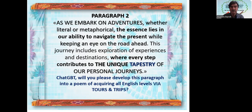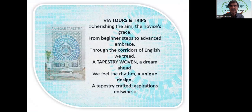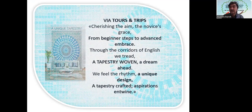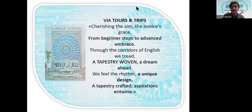ChatGPT, will you please develop this paragraph into a poem about acquiring all English levels via tours and trips? Here is the short poem: 'Via tours and trips, via harmony — cherishing the aim, the novice's grace, from beginner steps to advanced embrace. Through the corridors of English we tread, a tapestry woven, a dream ahead. We feel the rhythm, a unique design — a tapestry crafted, aspirations and vine.' This is all for today — thank you for listening, and see you next time.